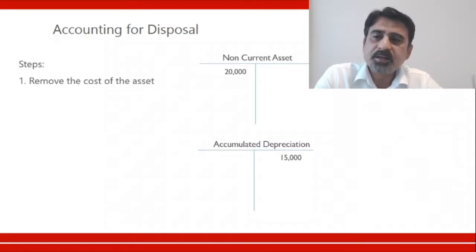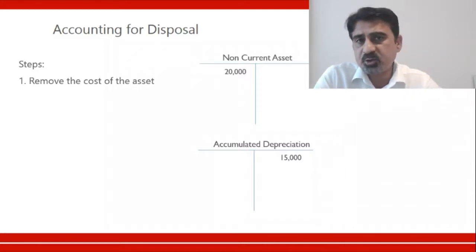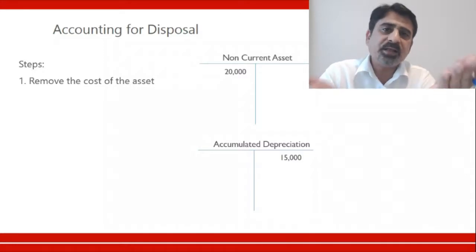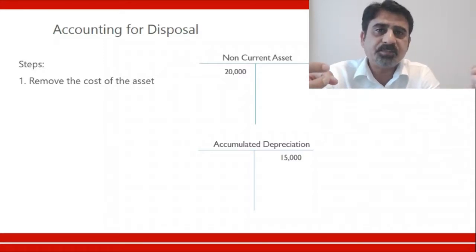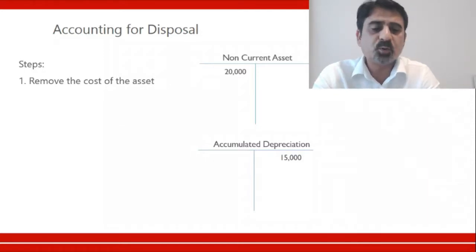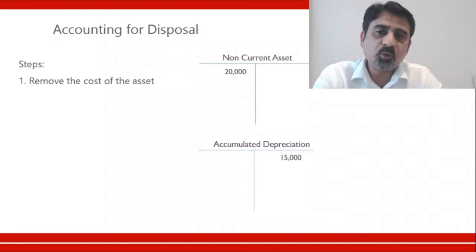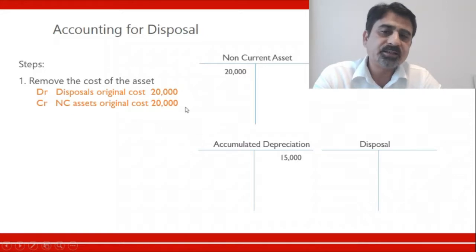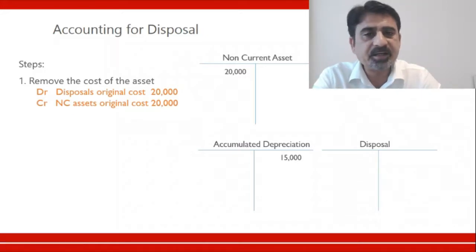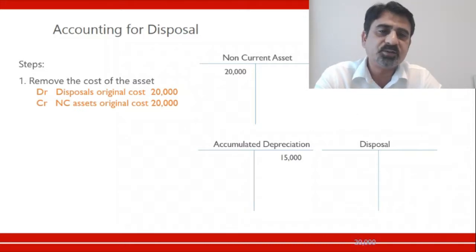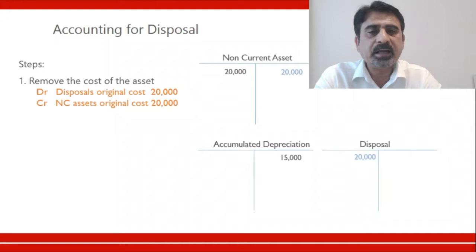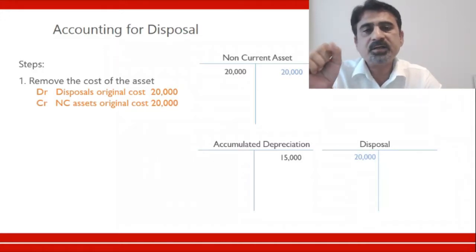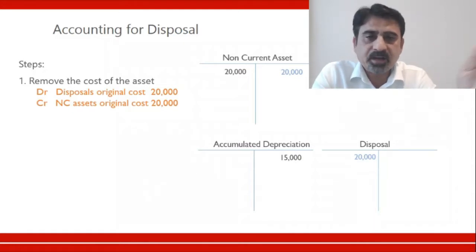The first step is to remove the cost of the asset. Since the asset is leaving the business, its ledger account must be closed — you make the debit and credit sides equal so the balance becomes zero. To do this, we create a temporary account called the disposal account, and make the double entry: debit disposal account with the original cost, and credit non-current asset. Now the two sides of the non-current asset account are equal, giving it a zero balance — it's gone.